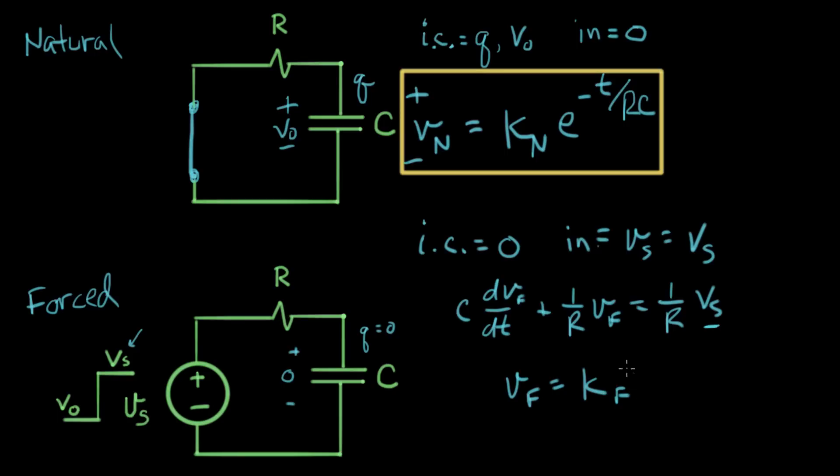The way we test our guess is to plug it back into here. Plug it back into the differential equation. So, I'm going to do that. So, we'll get C times the derivative of KF with respect to time, plus one over R, K sub F equals one over R times VS.